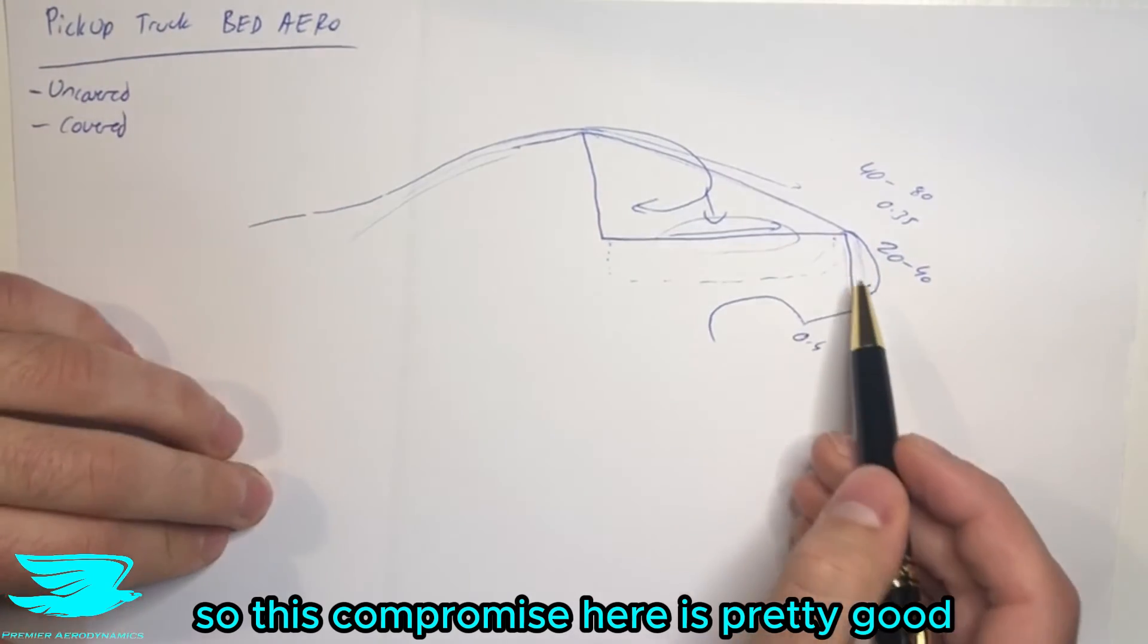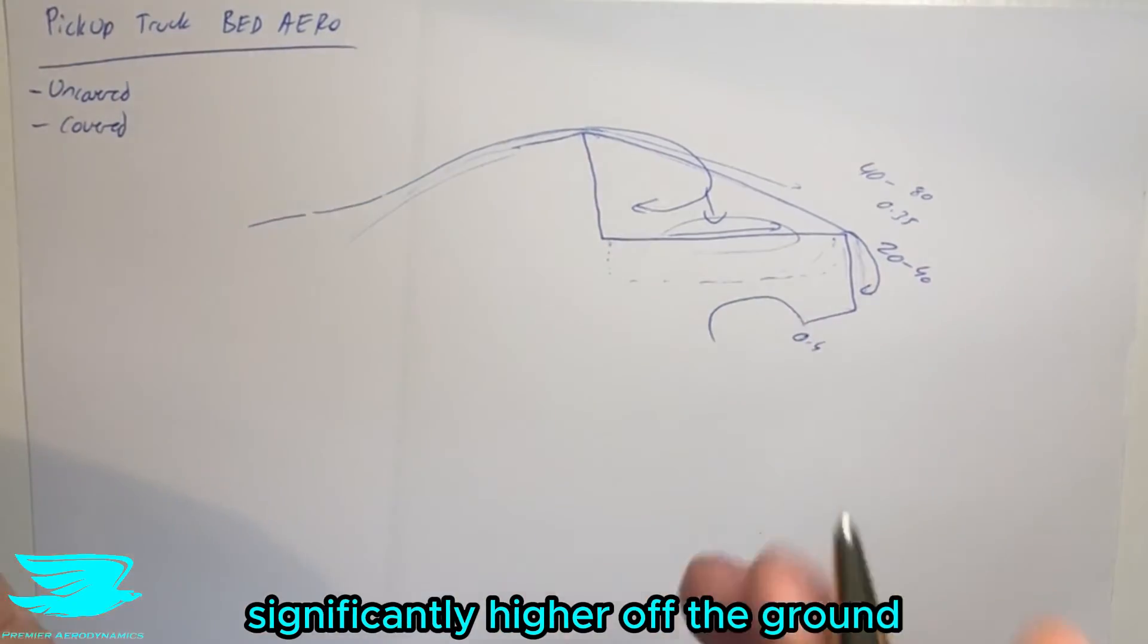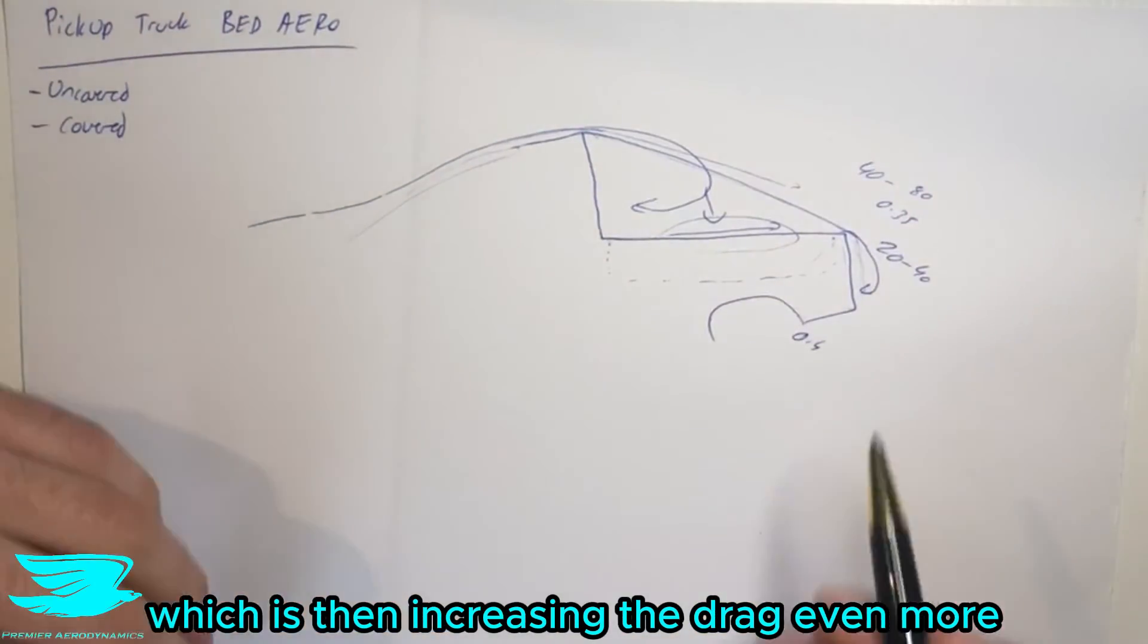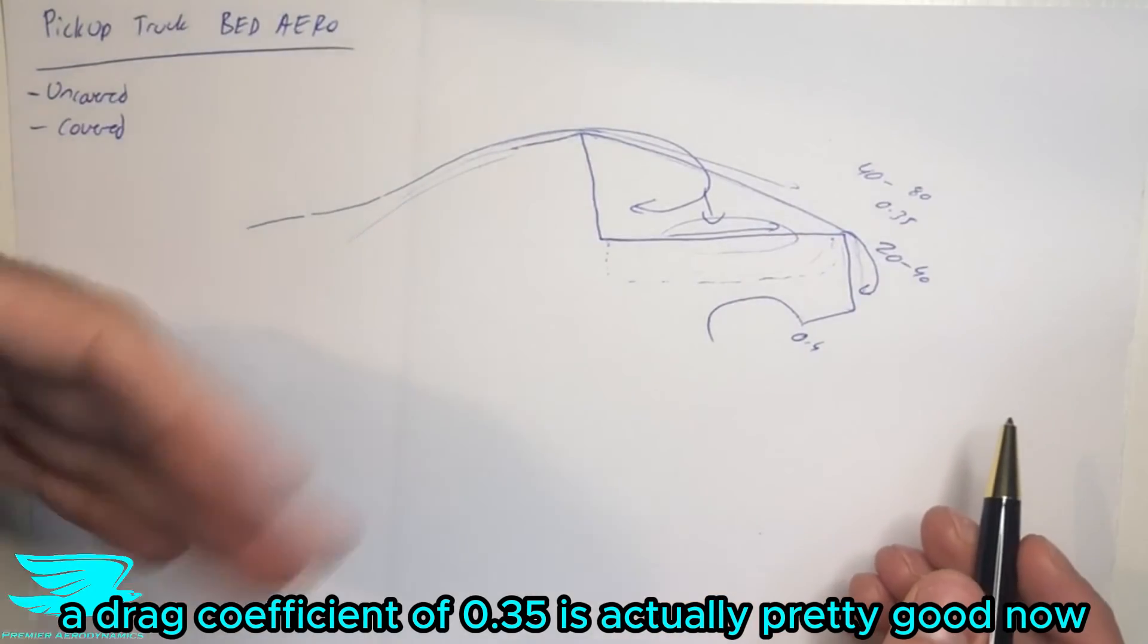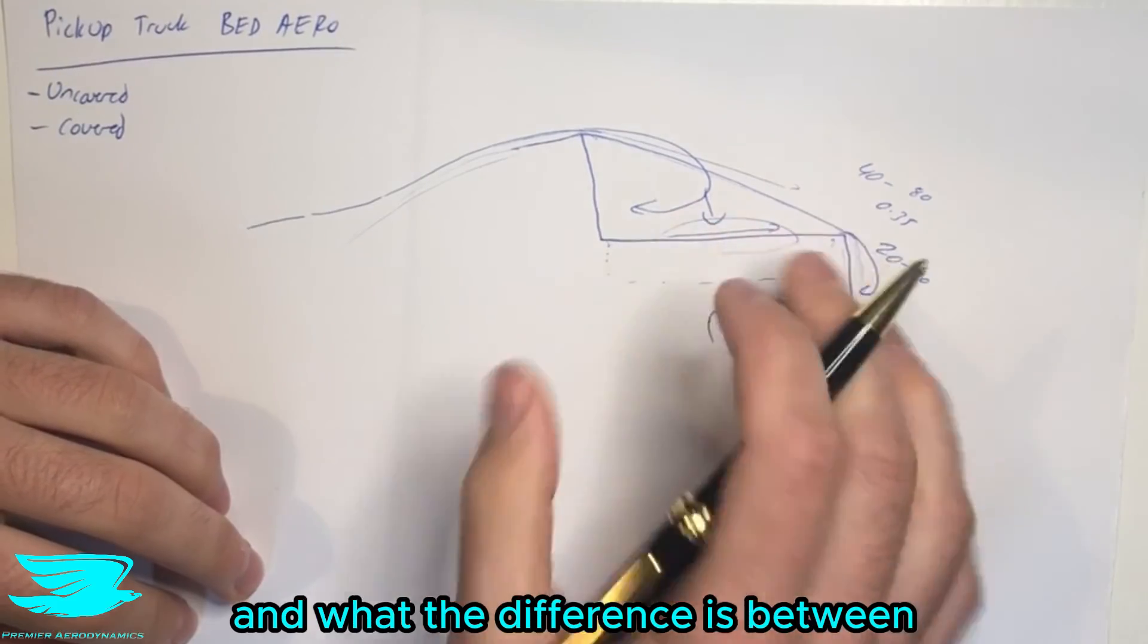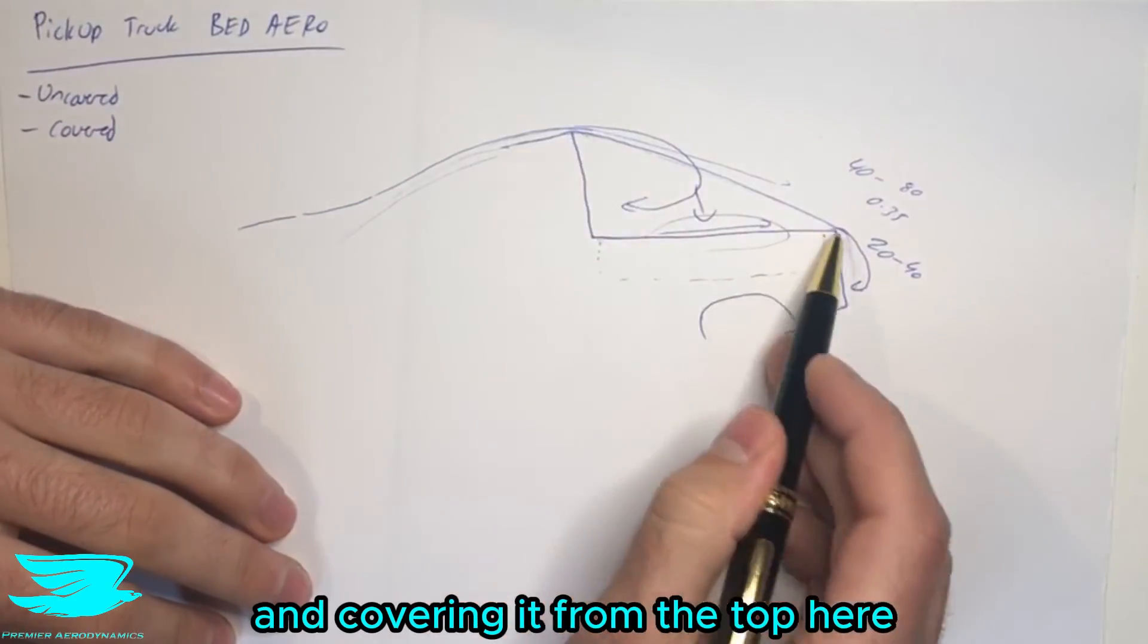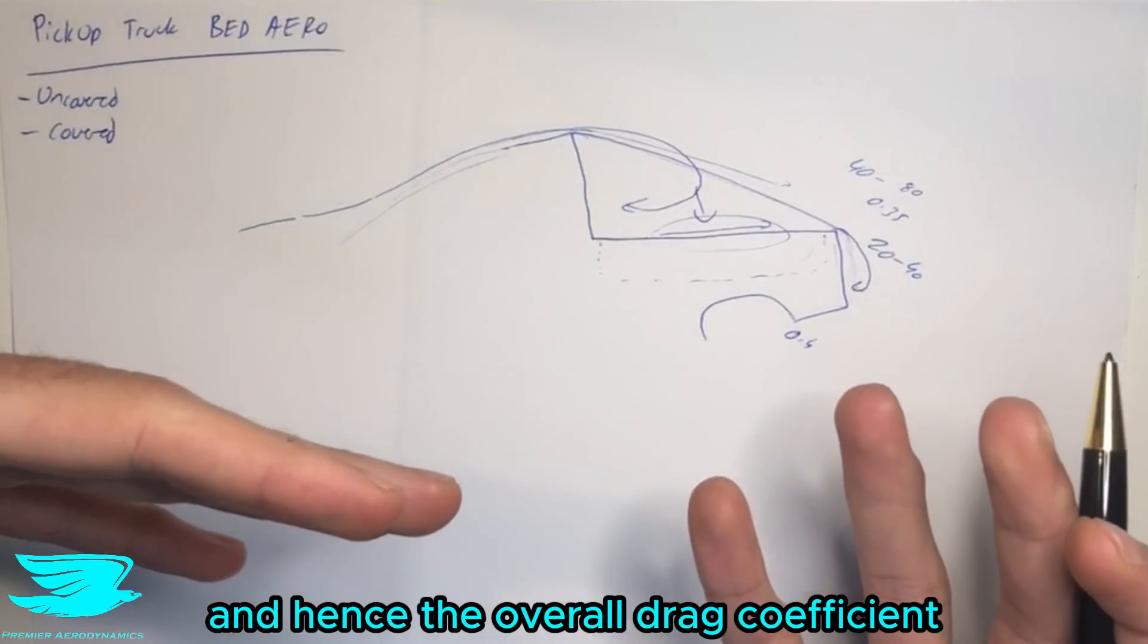So this compromise here is pretty good, not to mention that pickup trucks are usually simply higher off the ground. So more of their tires are exposed to the flow, which is then increasing the drag even more. So looking at this overall, a drag coefficient of 0.35 is actually pretty good now. So that is the aerodynamics of the pickup truck's bed and what the difference is between covering it completely flat and covering it from the top here and the effects on the pressure drag and hence the overall drag coefficient.